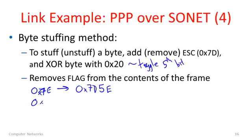And at the receiver I'll do the reverse. I'll simply XOR whatever comes after the escape character with 0x20 and that will turn it back into the 7E that we wanted.